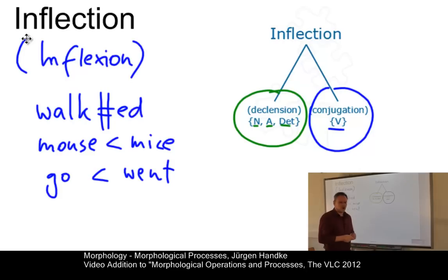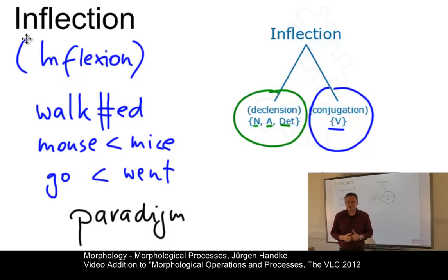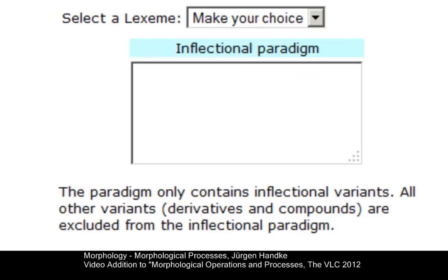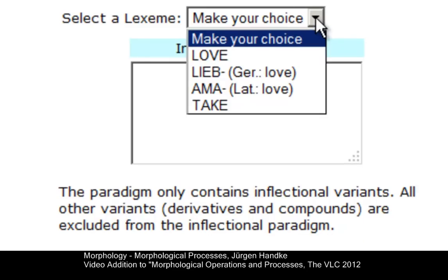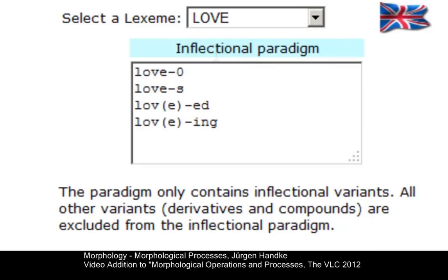Now, the set of inflectional variance associated with one base form is called the paradigm. Let's look at some paradigms in more detail. This little tool here allows us to select a number of base forms and see how many elements the paradigm will eventually contain.